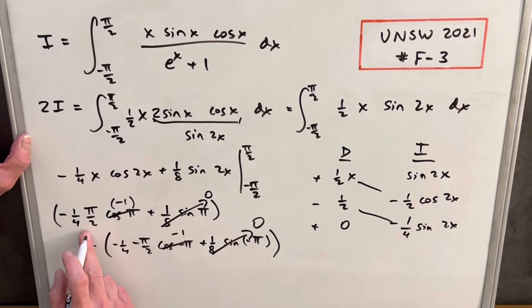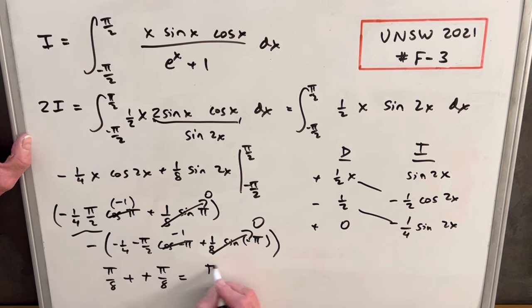Then simplifying, we're going to have pi over eight for this piece right here. And then for this one, we're going to have minus, and then here we're going to have a minus pi over eight. Minus, minus, plus. So we have pi over four.